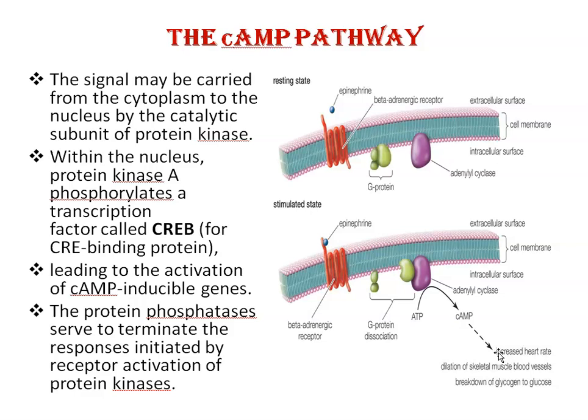It is important to recognize that protein kinases such as protein kinase A do not function in isolation within the cell. Protein phosphorylation is rapidly reversed by the action of protein phosphatases, which serve to terminate the responses initiated by receptor activation of protein kinases. For example, the serine residues phosphorylated by protein kinase A are usually dephosphorylated by the action of protein phosphatase 1.